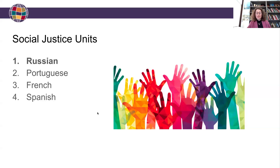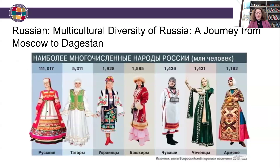When the department approached me about participating in the social justice project, I seized the opportunity to create a unit on multicultural diversity of Russia to incorporate social justice standards more explicitly in my classrooms. My unit is entitled Multicultural Diversity of Russia: A Journey from Moscow to Dagestan. It takes students on a journey from the heart of Russia's capital, Moscow, to the Republic of Dagestan in the south of Russia, which is the most multinational region — not only of Russia, but Europe in general — populated by more than 60 different ethnicities.